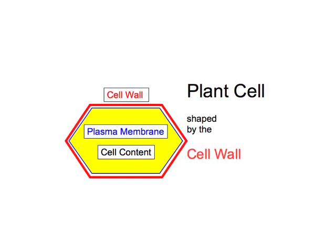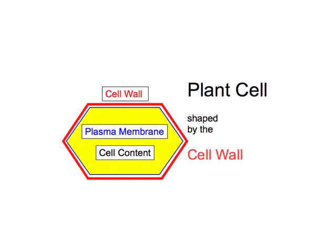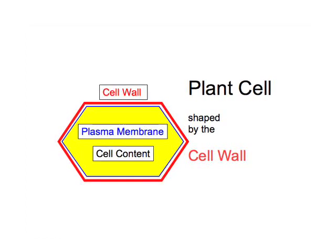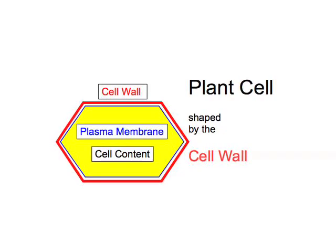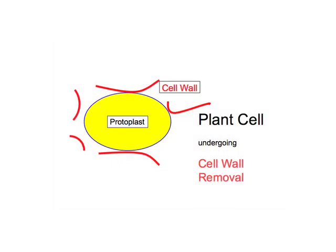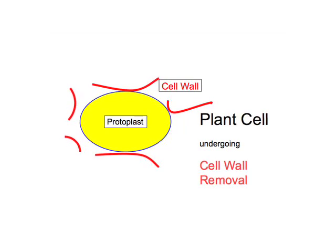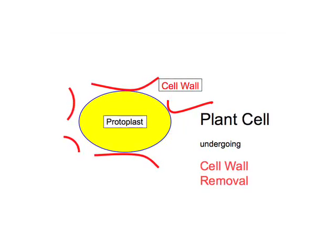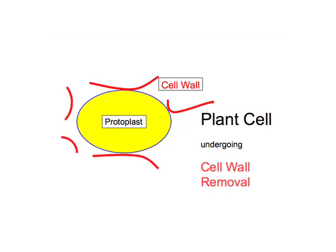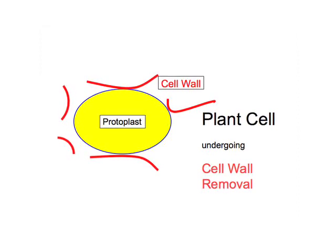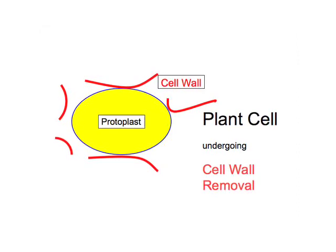Plant cells are shaped by rigid walls. Osmotic forces press the plasma membrane against the cell wall, tightly filling the wall-formed box. The cell wall can be removed with enzymes. The remaining structure — a plant cell without walls, or a plant protoplast — is now ordered by the plasma membrane.